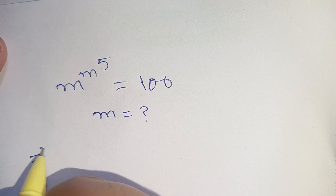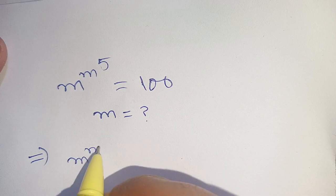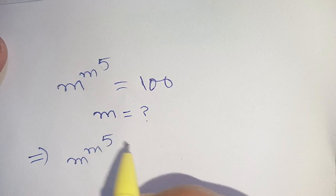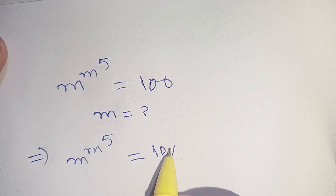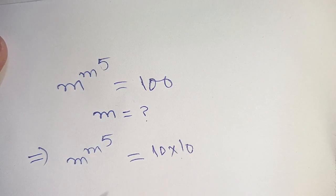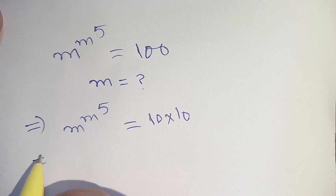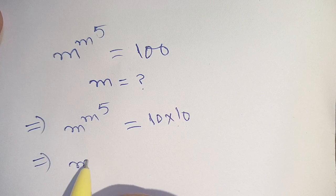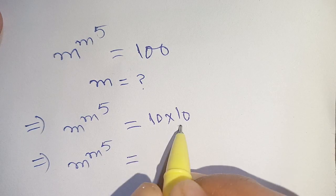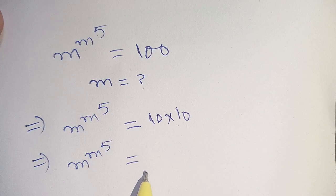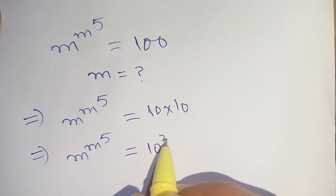We can write m raised to the power m raised to the power 5 is equal to 100, which can be written as 10 times 10, and that can be written as 10 raised to the power 2.